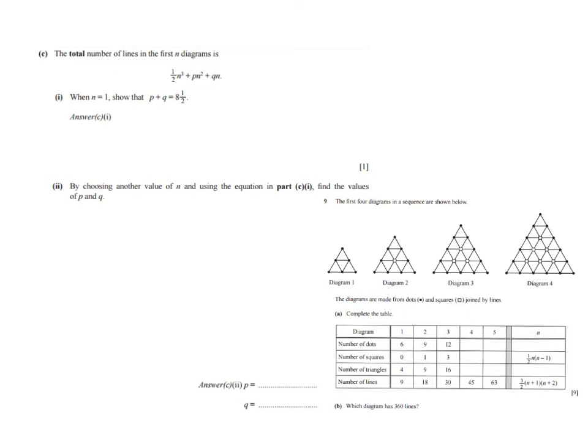So let's just substitute 1 for n in the expression and see what happens. So it's going to say 1.5 times 1 to the power 3 plus p times 1 squared plus q times 1. And as you can see here, there is an equal sign. But I have to show it. And what is the total number of lines in the first diagram? You can look it up in the table. It is 9.